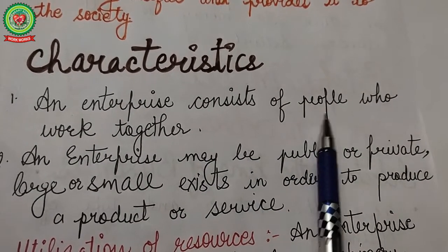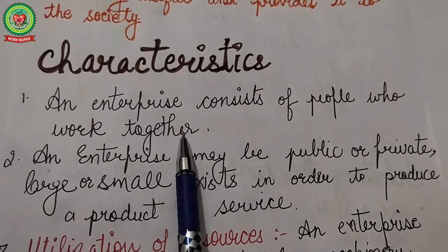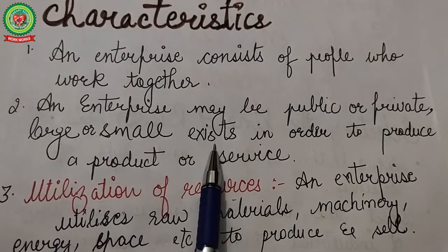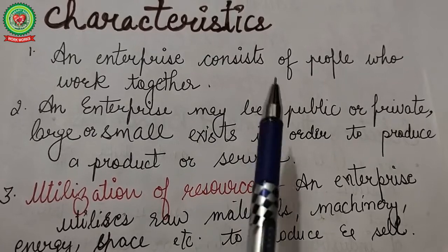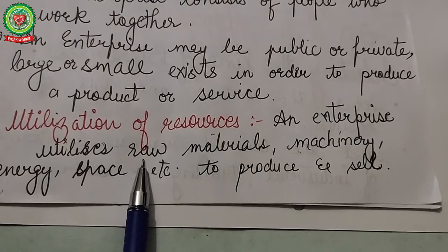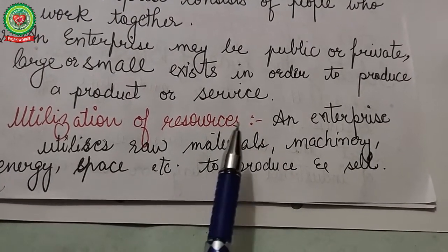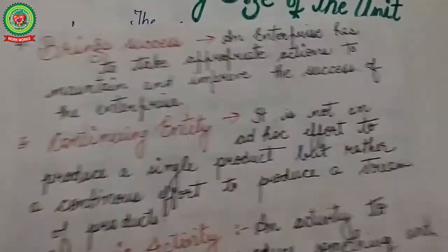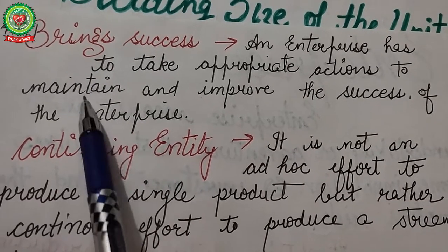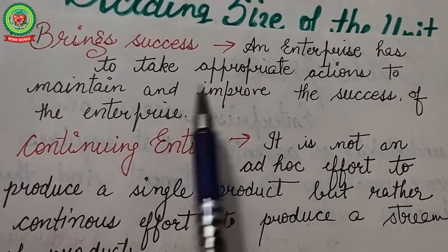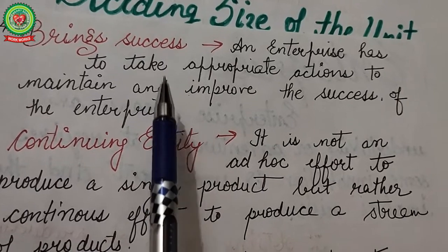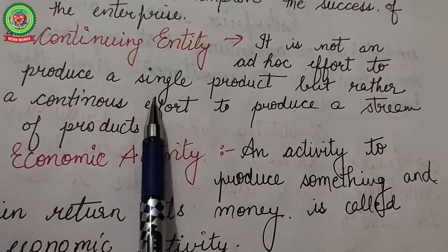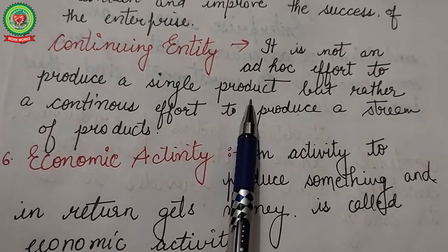The characteristics of enterprise are as follows. An enterprise consists of people who work together for the purpose of making or selling a product or service. An enterprise may be public or private, large or small, and exists to produce a product or service that others consume and pay for. It utilizes raw material, energy, space, machinery, and other inputs to produce or sell products. An enterprise must take appropriate actions to maintain and improve its success, comparing costs and gains. It is not an ad hoc effort but a continuous effort to produce a stream of products.